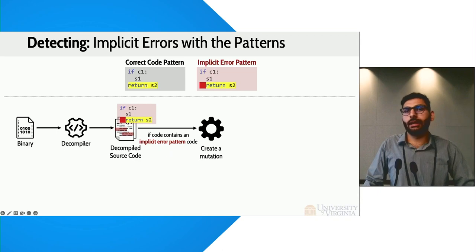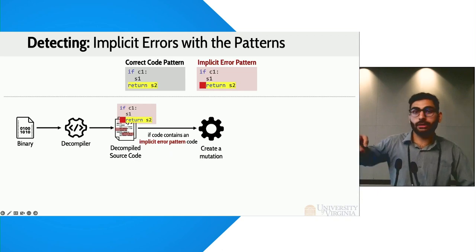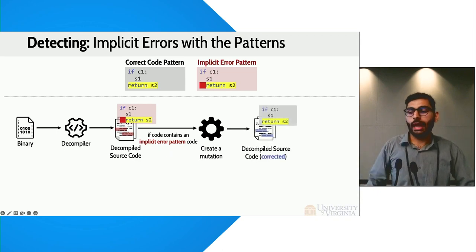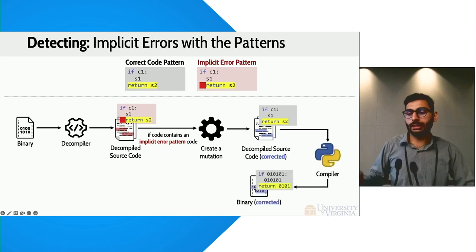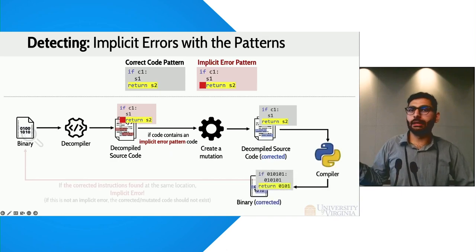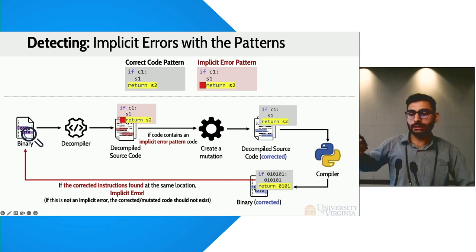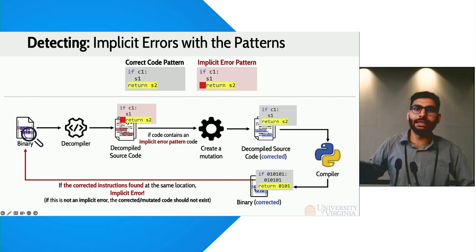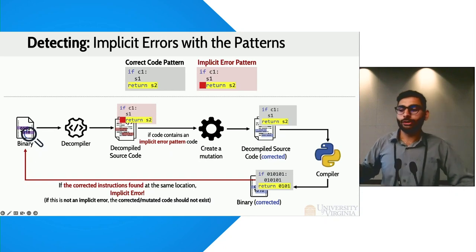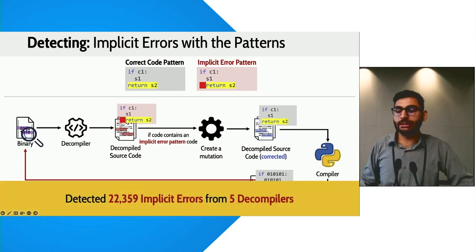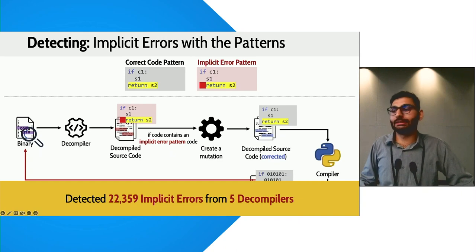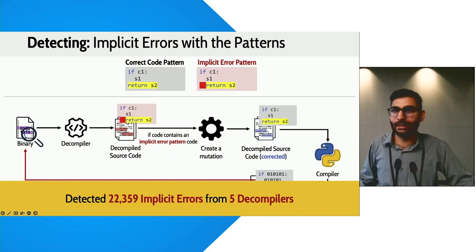If we find an implicit error pattern, we mutate it with the correct code that we have and recompile it. The idea is that we compare this corrected binary with the original one. If the original binary has the corrected code at the same offset, that means the implicit error we detected was indeed an implicit error. Using this approach, we were able to detect more than 22,000 implicit errors across five decompilers — errors that were not previously detected.